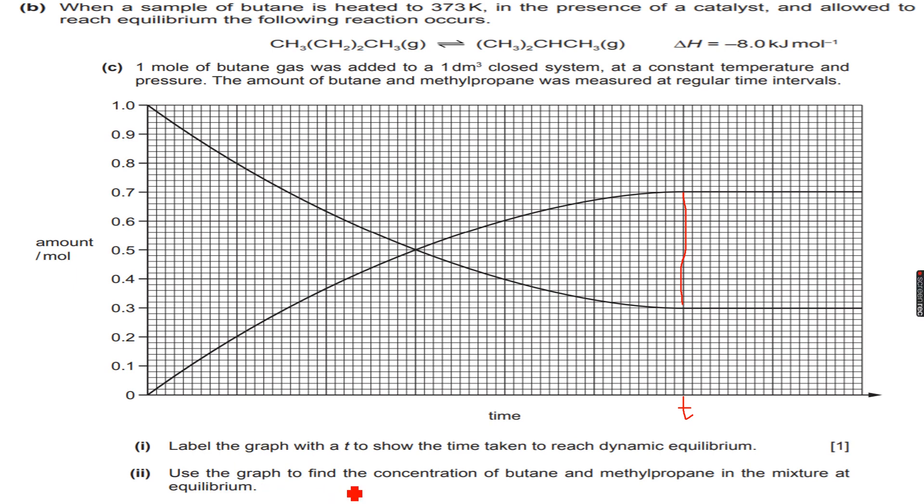Use the graph to find the concentration of butane and methylpropane in the mixture at equilibrium. So the reaction has reached equilibrium over here. And if we see the graph, then at equilibrium we have 0.7 mole of methylpropane.